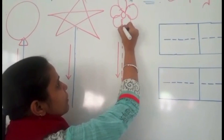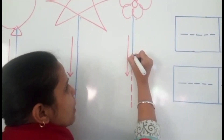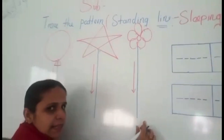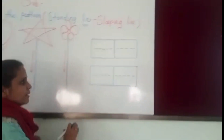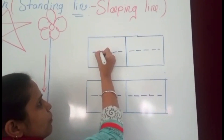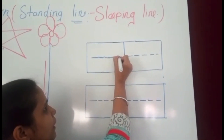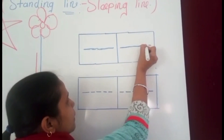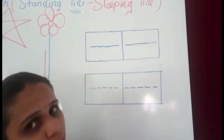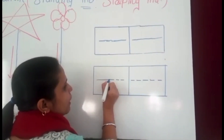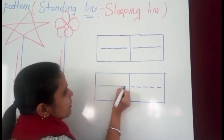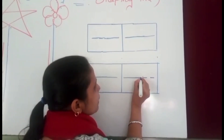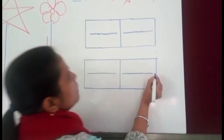Again — start from top, come down, and this is a standing line. Now let's see making a sleeping line. Start from one point and go to the other end. Start from one point, join dot to dot. Let's do one more time — start from one side, join dot to dot, and done.